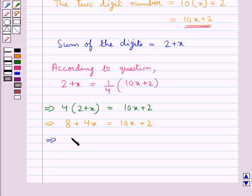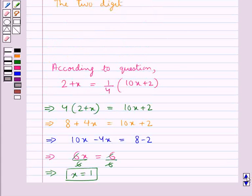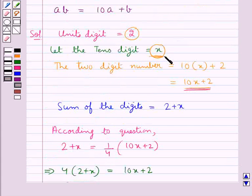So this gives us 10X minus 4X is equal to 8 minus 2 which is further equal to 6X is equal to 6. So on dividing both sides by 6, we get X is equal to 1.